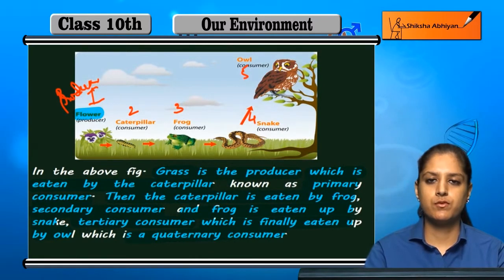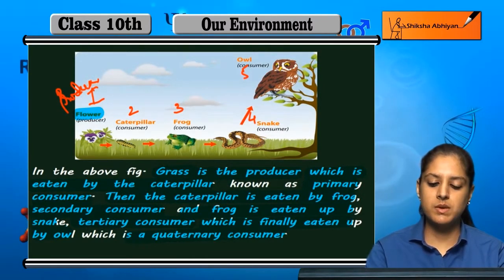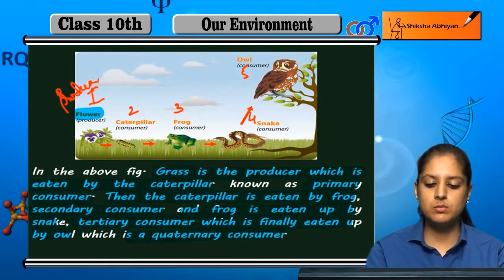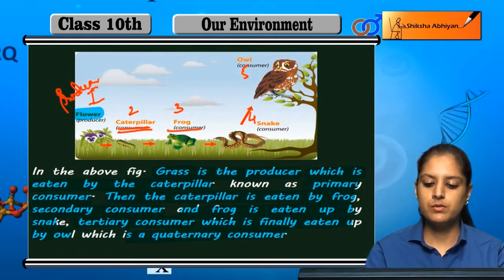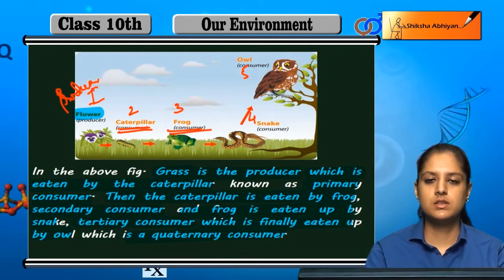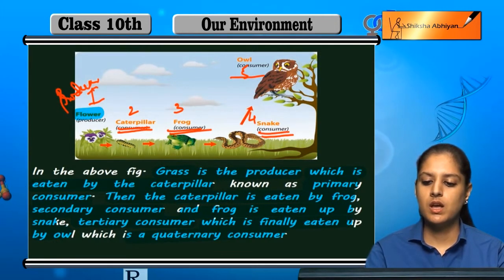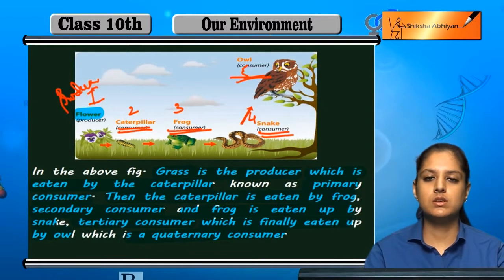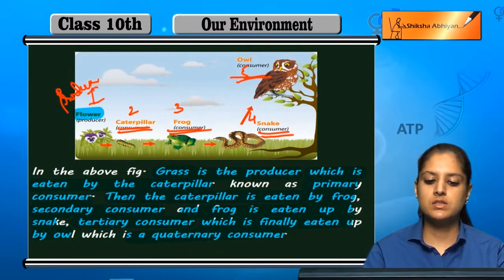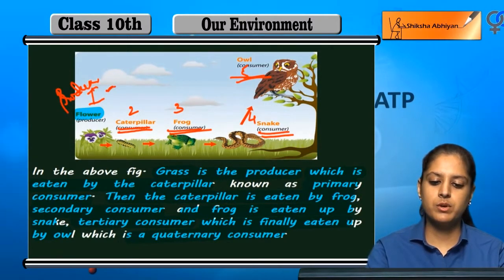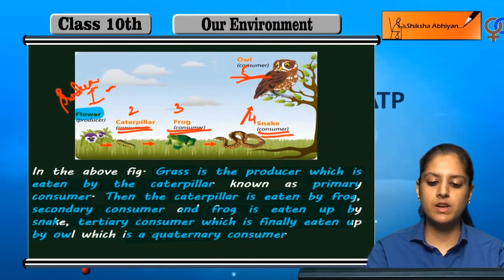So this is a five-step food chain: the producer is grass at the first level, the caterpillar is the primary consumer, the frog is the secondary consumer, the snake is the tertiary consumer, and the owl is the quaternary consumer. These are the trophic levels in a food chain.